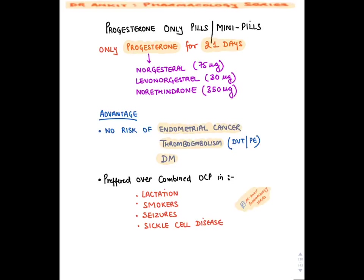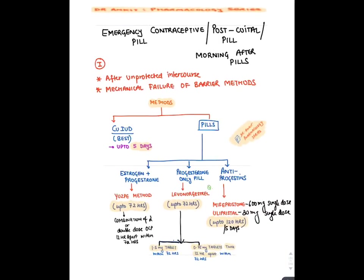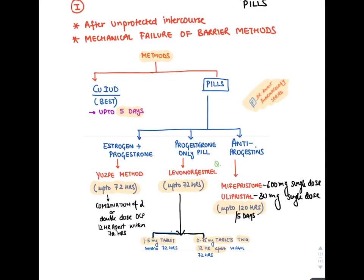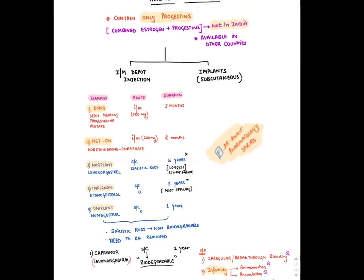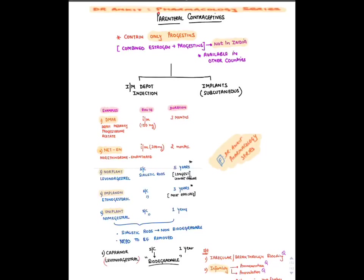Progesterone-only pills are preferred when estrogen must be avoided — no risk of endometrial cancer, thromboembolism, or diabetes mellitus effects. They are preferred in lactating mothers, smokers, and sickle cell disease. Emergency contraceptive pills (post-coital/morning-after pills) are given after unprotected intercourse or barrier method failure. Options include: copper IUD (best, up to 5 days), double-dose OCP within 72 hours (Yuzpe method), levonorgestrel-only pill up to 72 hours, and anti-progestins mifepristone and ulipristal up to 5 days.